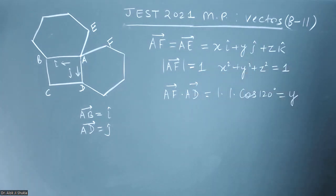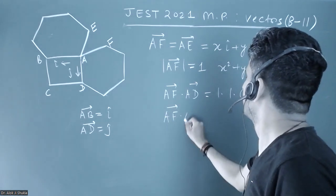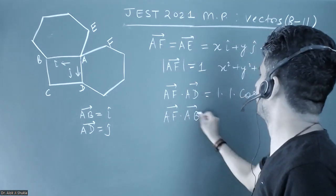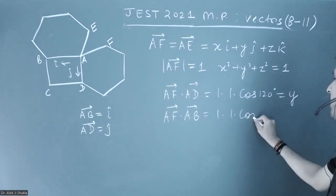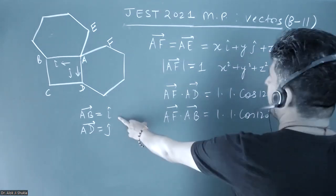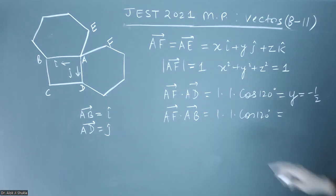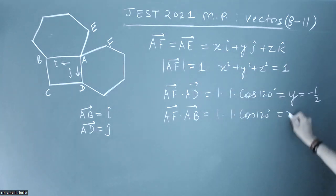Similarly, AF·AB equals 1 × 1 × cos(120°) = -1/2. AF dot AB will give you x, so x also equals -1/2. If I substitute this here, I'm going to get 1/4 + 1/4 + z² = 1.